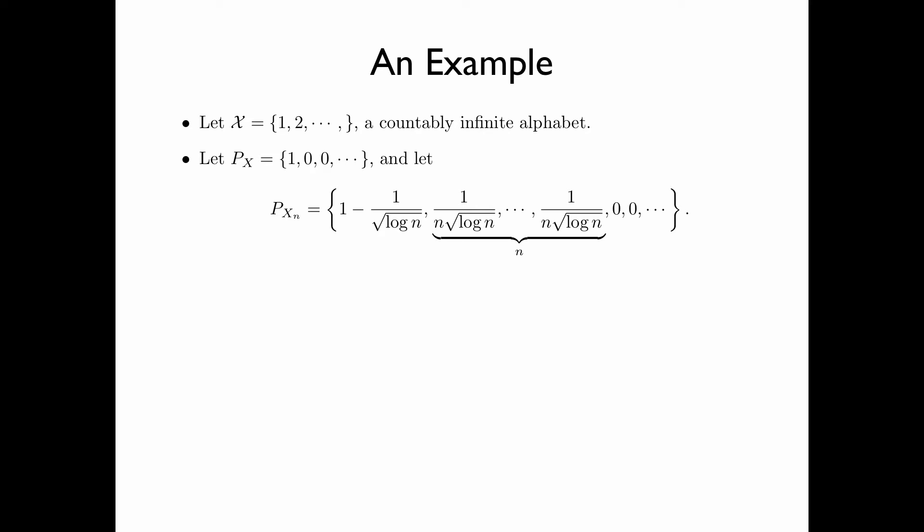And let P_X^n be the probability distribution consisting of the probability mass 1 minus 1 over square root log n, then followed by n copies of 1 over n times square root log n, and then followed by all zeros.